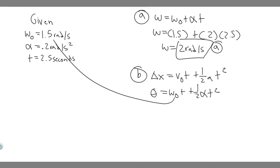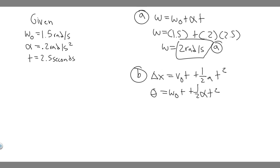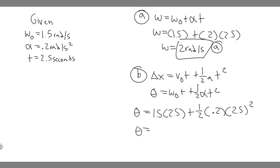We can plug in omega_0 equals 1.5, time equals 2.5 seconds (from 0 to 2.5 seconds, assuming the wheel hasn't turned at all initially), and alpha equals 0.2. So theta equals 1.5 times 2.5 plus one-half times 0.2 times 2.5 squared. Go ahead and plug that into your calculator: 1.5 times 2.5 plus one-half times 0.2 times 2.5 squared.